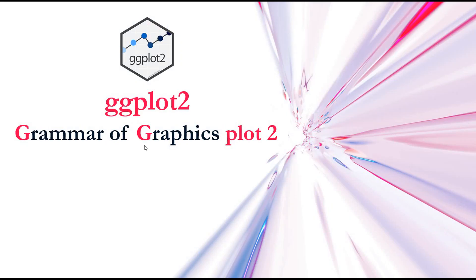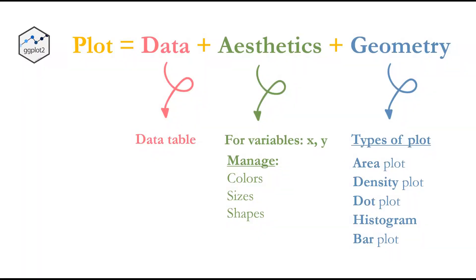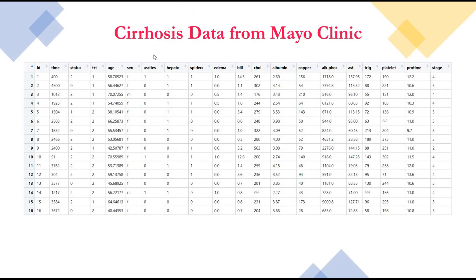Now let's go and see how we can visualize two continuous variables using the ggplot package. To create a ggplot we need to specify three things: where the data will come from, the aesthetics — which variables we want to use for the plot, x and y — and the geometry, which is what type of plot we want to use. In this video I will show you how to do scatter plot, regression line, text annotation, and a marginal rug.